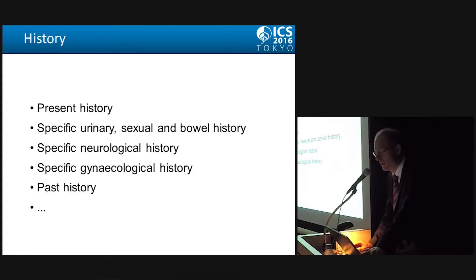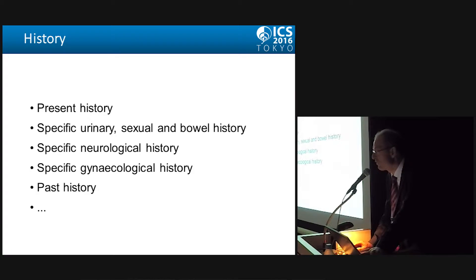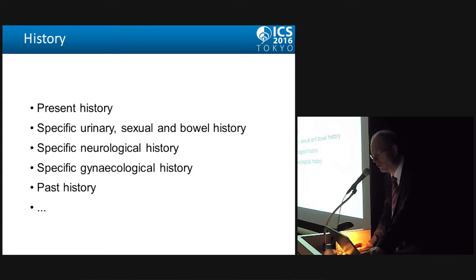The cornerstone is the medical history — the present history: what is the problem, what is the patient complaining about, the specific urinary history, but don't forget the sexual and also the bowel history. Then ask for the neurological history: is there an underlying neurological disease that is known, that has been known in the past, but also the gynecological history is important, as well as the past history regarding surgical interventions and other disorders.